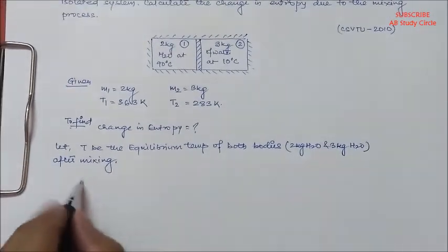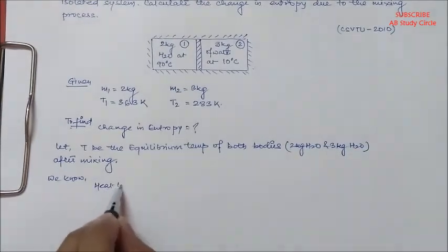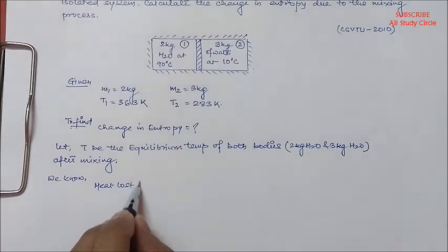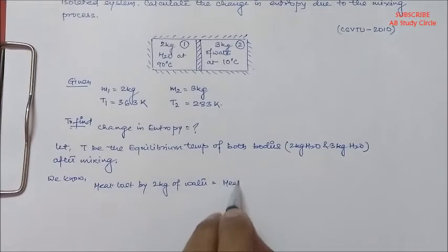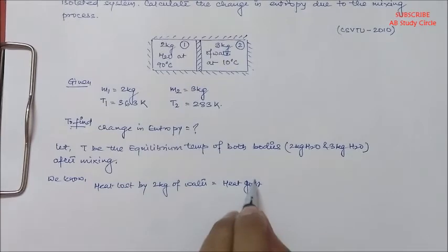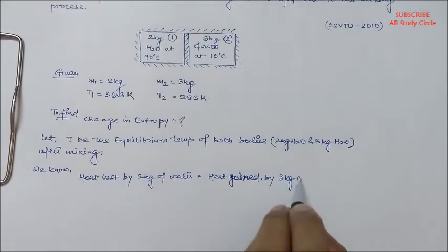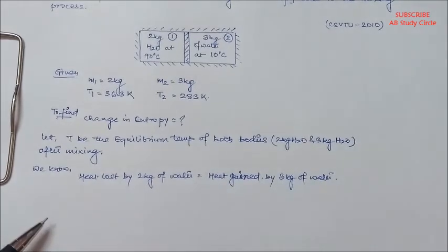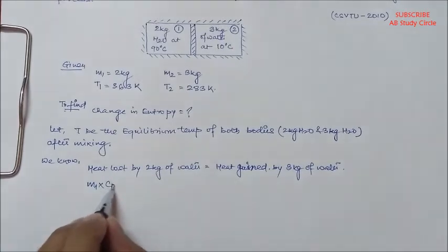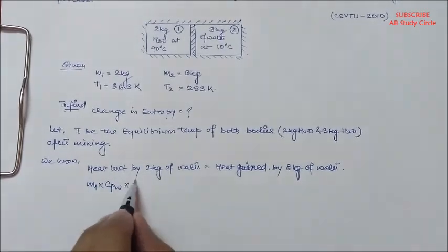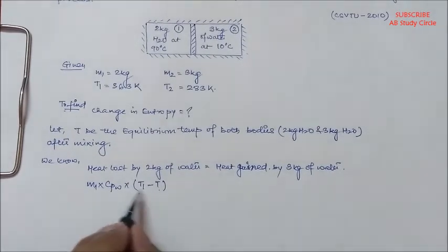Now, we know heat lost by 2 kg of water is equal to heat gained by 3 kg of water. It will be M1 times CPW times (T1 minus T) is equal to M2 times CPW times (T minus T2), because after gaining some heat the body 2 will have an increased temperature.